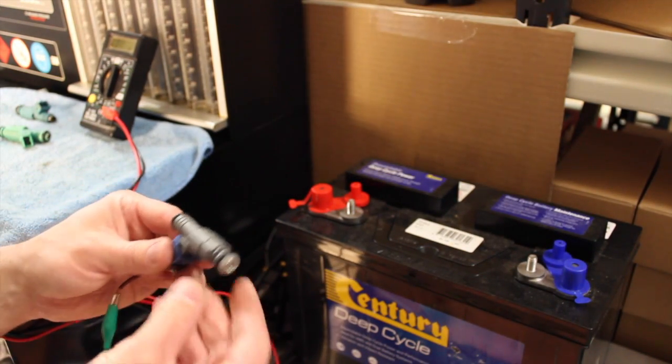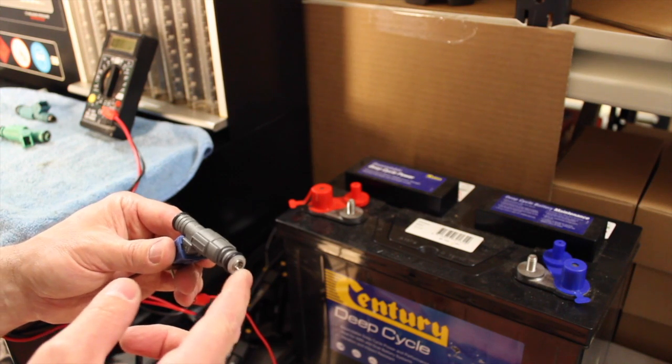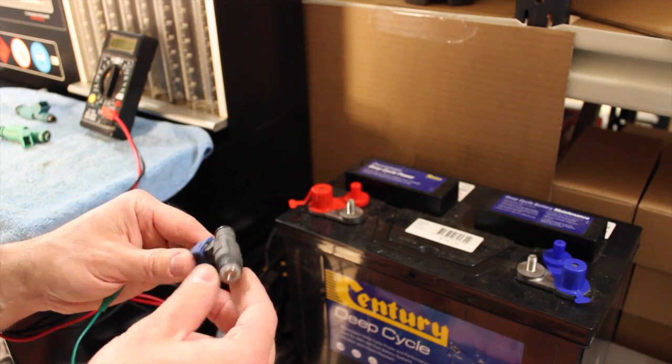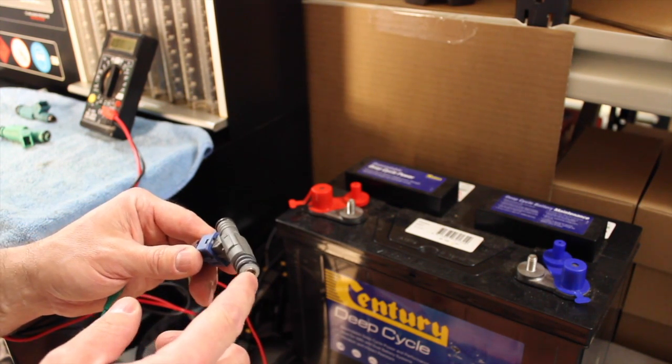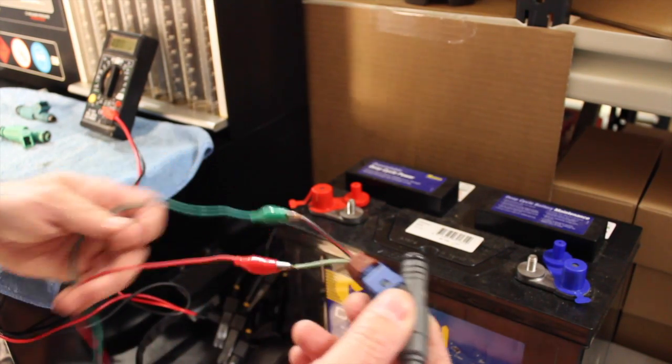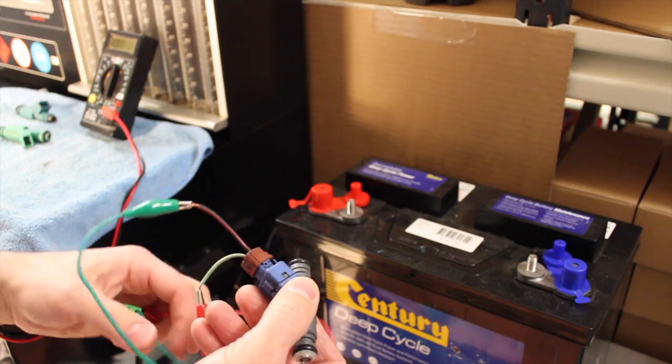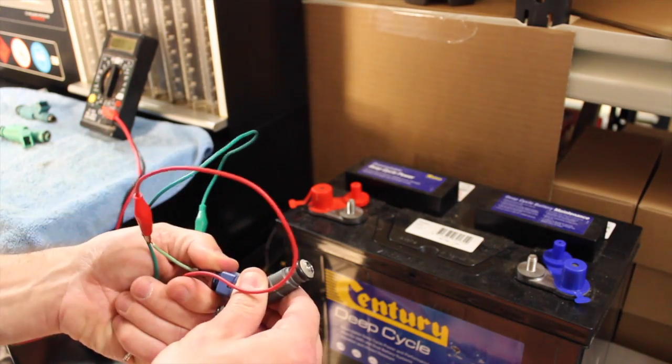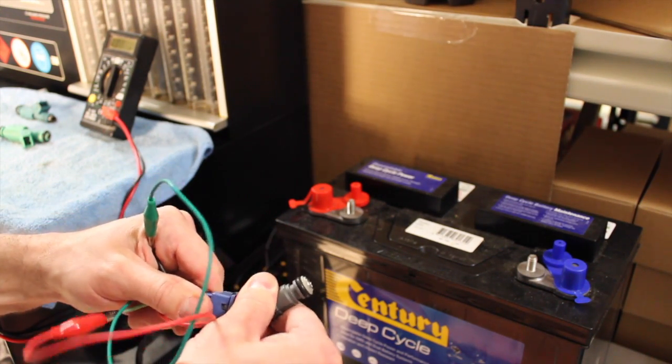So now we're going to test if the injector actually works and opens and closes, because a lot of the times they gum up and they won't open, they'll be locked shut or they'll be locked open. So we want to test that by getting a plug there off an old wiring loom, we've plugged that on and just got some gator clips.